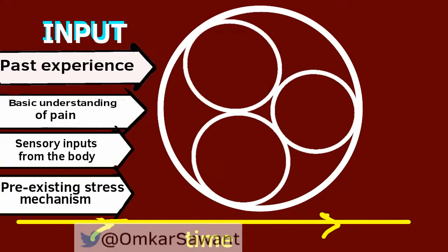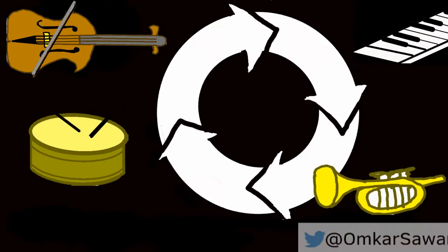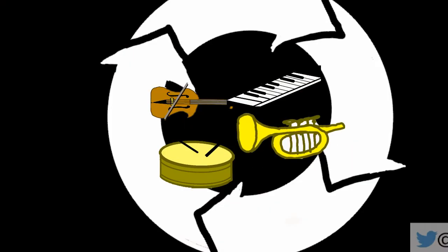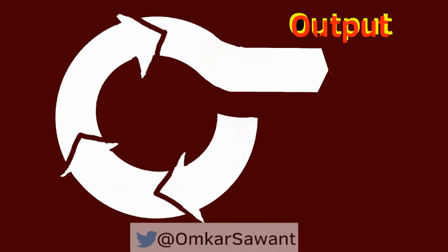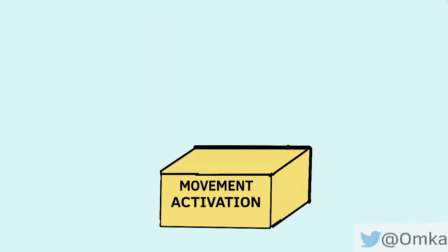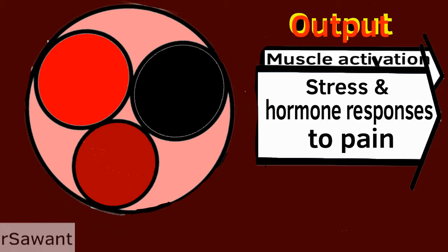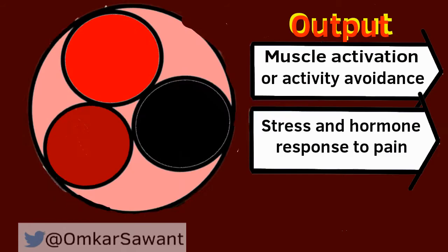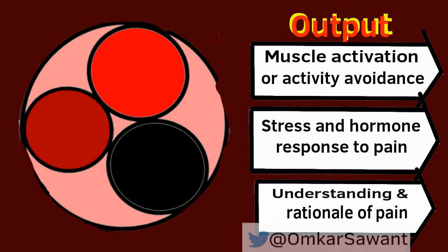This helps to synthesize these inputs in the brain like an orchestra and produce a homogeneous response defined as the pain response. The output generated by this neuromatrix triggers muscle action, which is also called movement activation or movement avoidance, along with the stress and hormonal response to pain and the unconscious justification and meaning given to the reasoning for this pain.